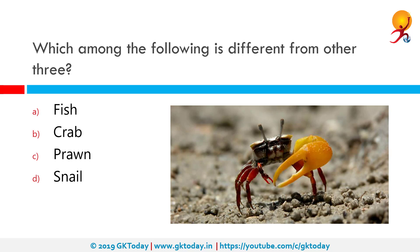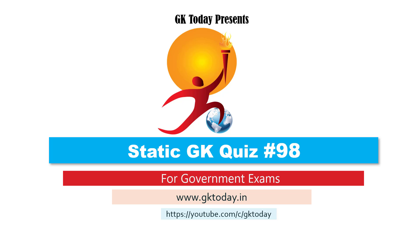Which among the following is different from the other three? The correct answer is fish, because except for fish, the rest of them are warm-blooded. That's all for today's quiz. Until the next video, goodbye.